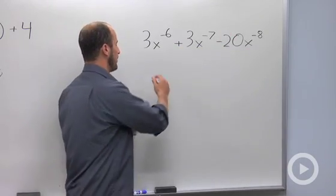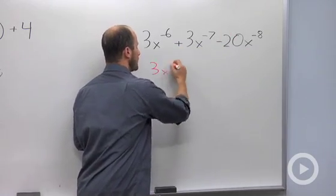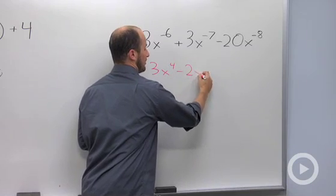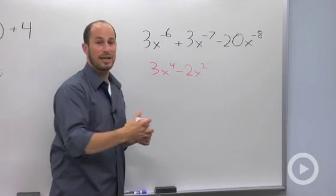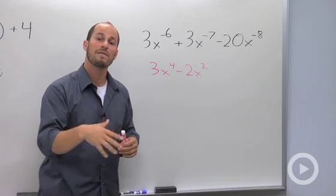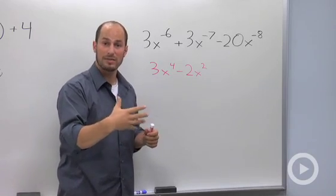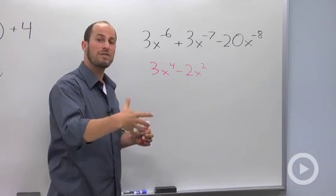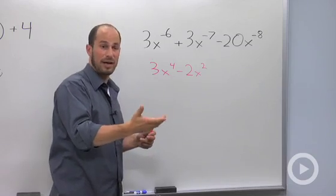And what I want to do is draw a comparison. If I say 3x to the fourth minus 2x squared, and I ask you to factor this, the first thing you want to do is to factor out the greatest common factor.